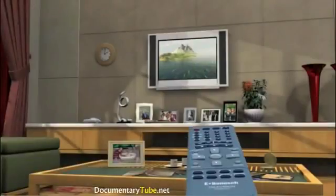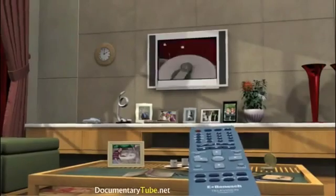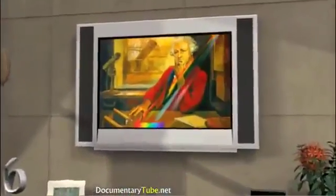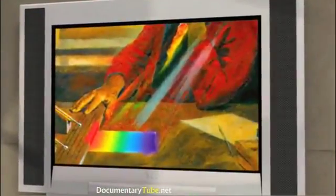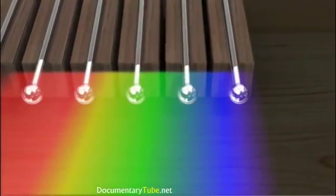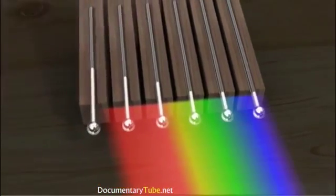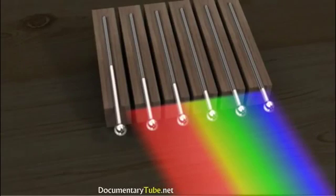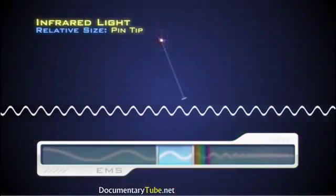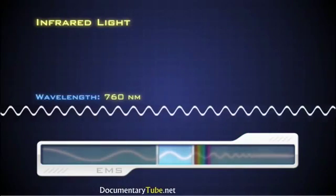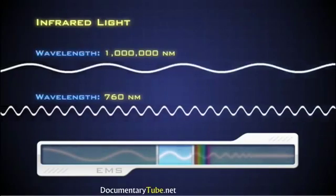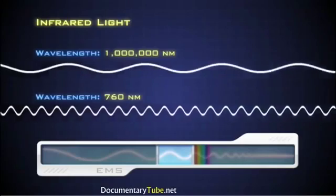When you use a remote control to change channels on your TV, your remote is using light waves beyond the visible spectrum. Back in 1800, William Herschel conducted an experiment measuring temperature changes between the colors of the spectrum, plus one measurement beyond visible red. When that thermometer registered a temperature warmer than all the other colors, Herschel had discovered another region of the electromagnetic spectrum: infrared light.